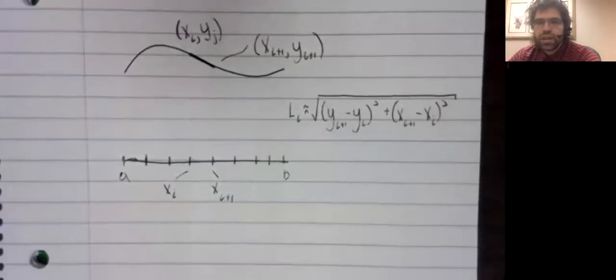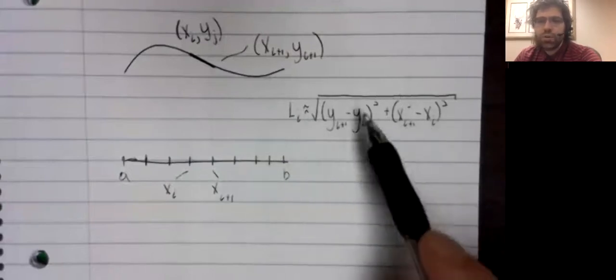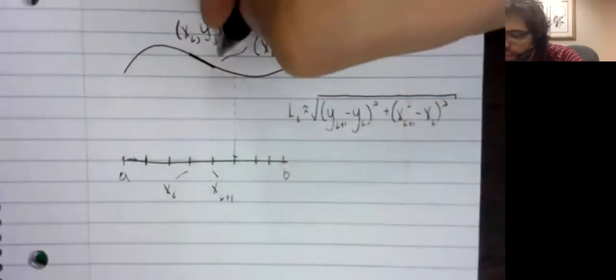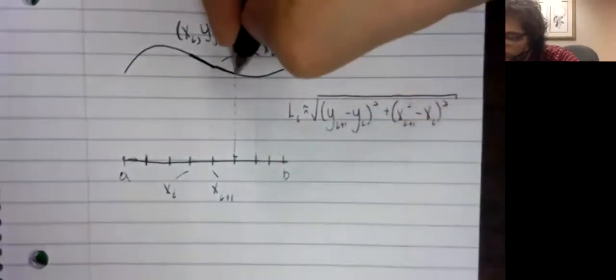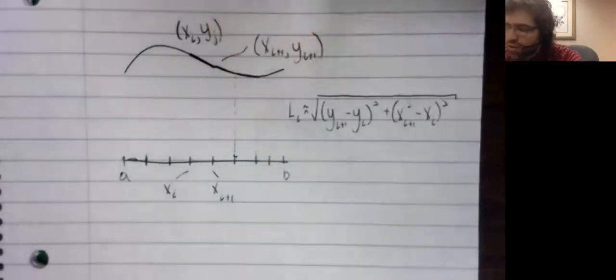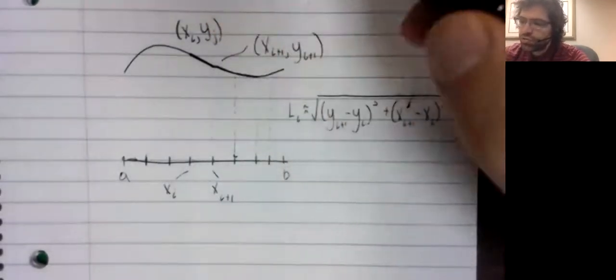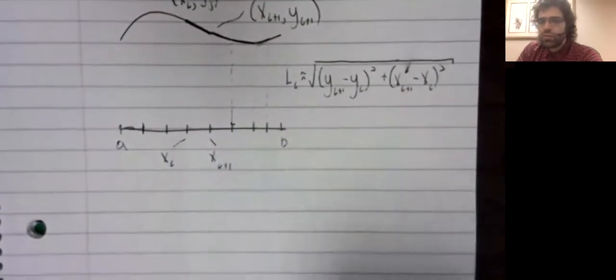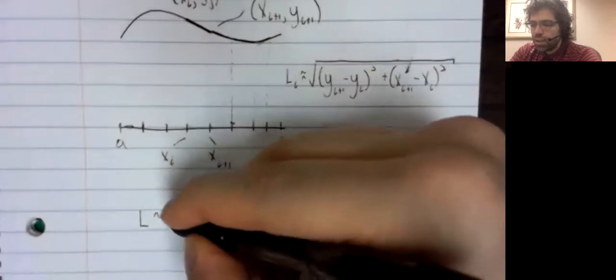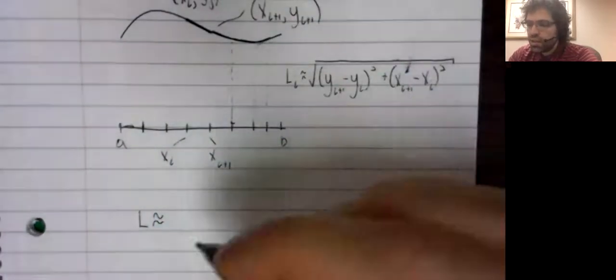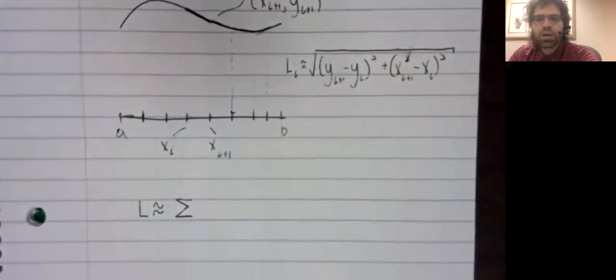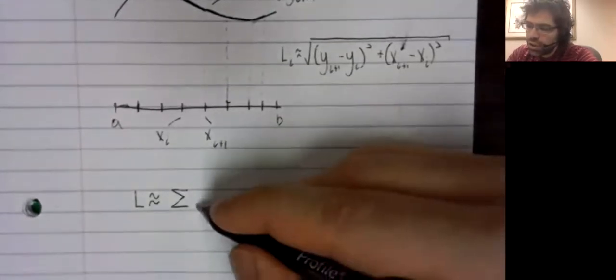And now we'll add all of these approximations up. We can repeat this process on each sub-interval to get a bunch of approximations. And we'll add those approximations up to get an approximation of the actual arc length that we are looking for.